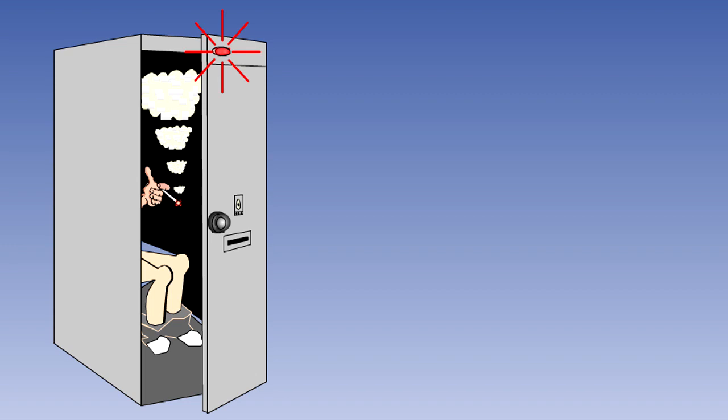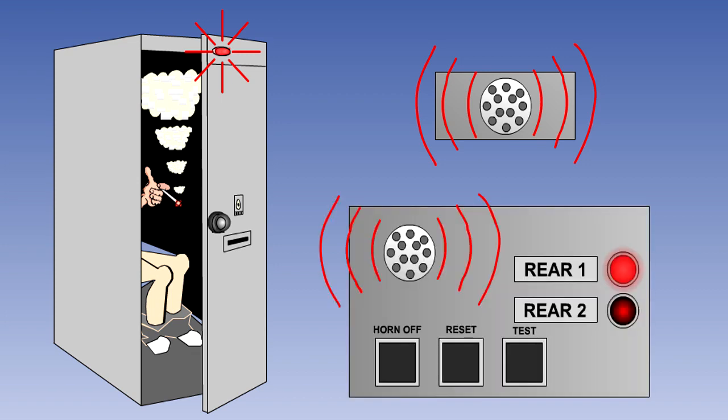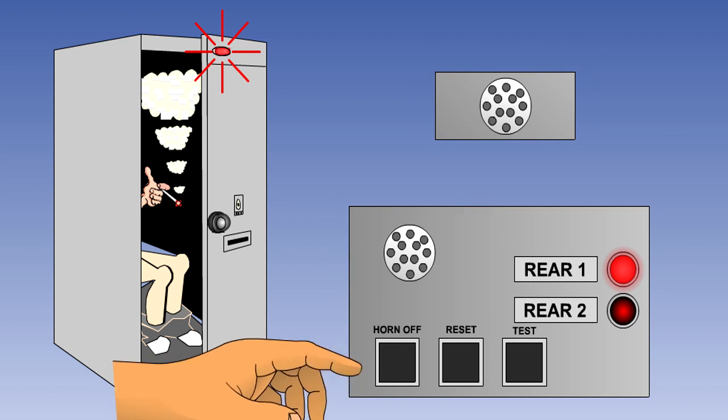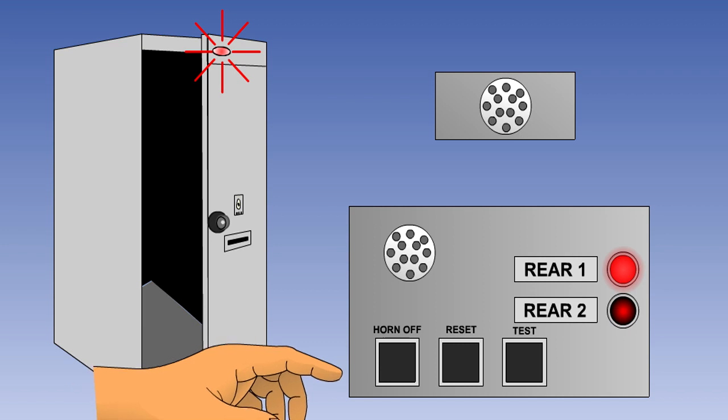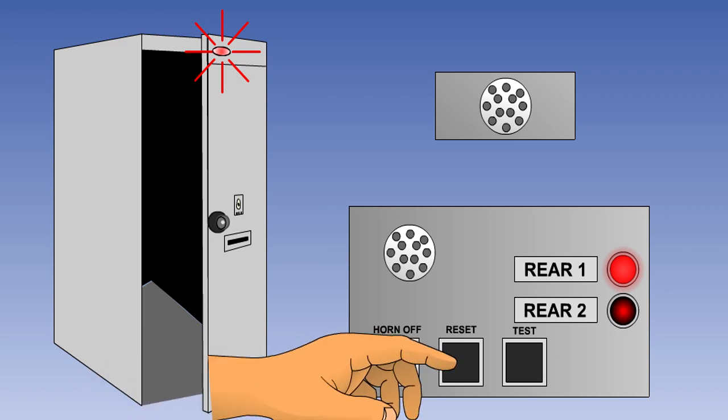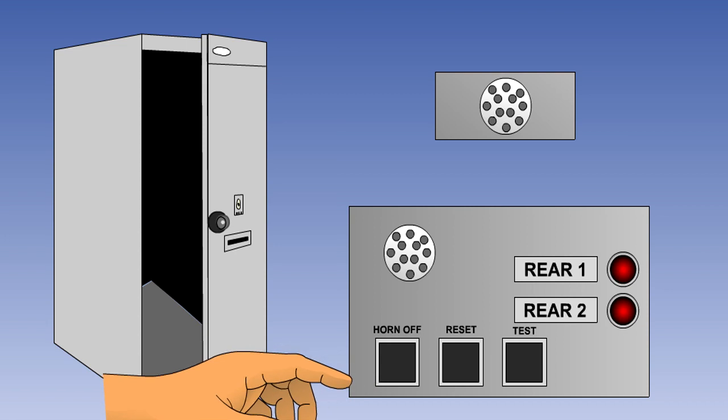If smoke is detected in a lavatory, a warning light will come on outside the affected lavatory. The cabin chimes will sound, and a warning will be given both orally and visually at the senior cabin crew member station. The oral warning can be cancelled, but the warning light will remain lit until the smoke has cleared and the reset button is pressed.